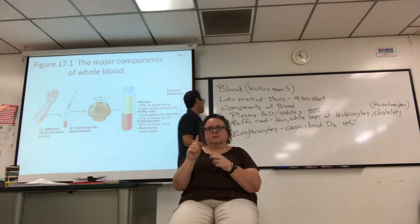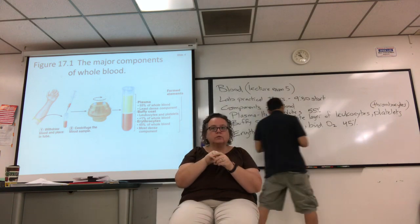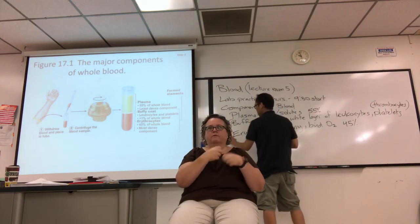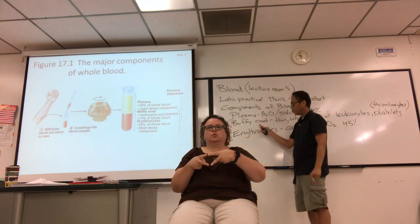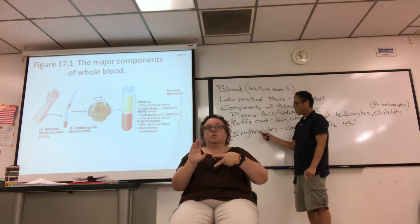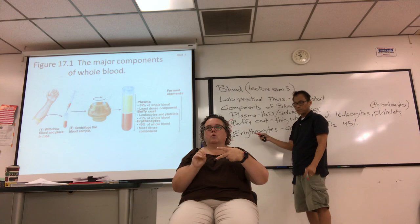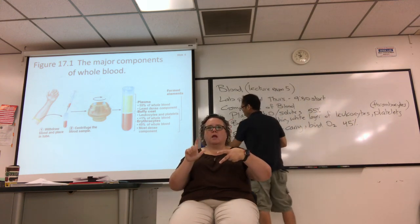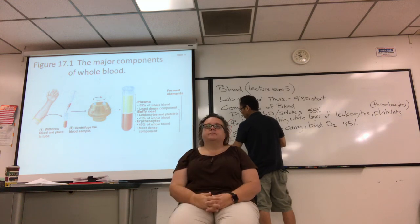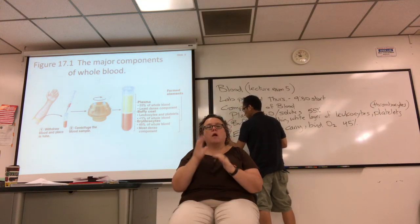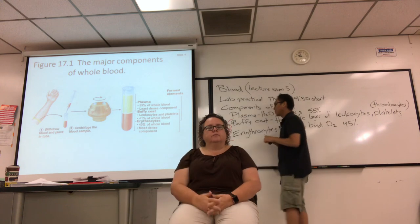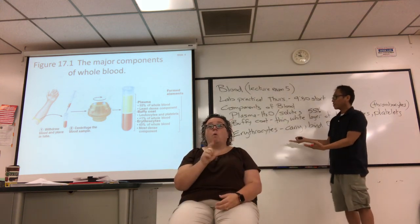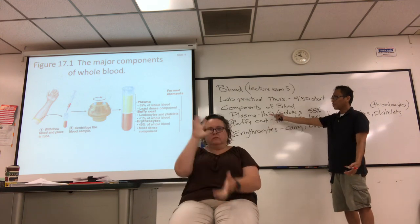About half of blood is what's called the formed elements — a kind of a weird term, it's just the blood cells. But some of these blood cells are not true cells, so they're called formed elements. That term includes the buffy coat and the erythrocytes. Those are the blood cells or formed elements. People used to use the term 'whole blood,' which means everything — the blood cells and the plasma.